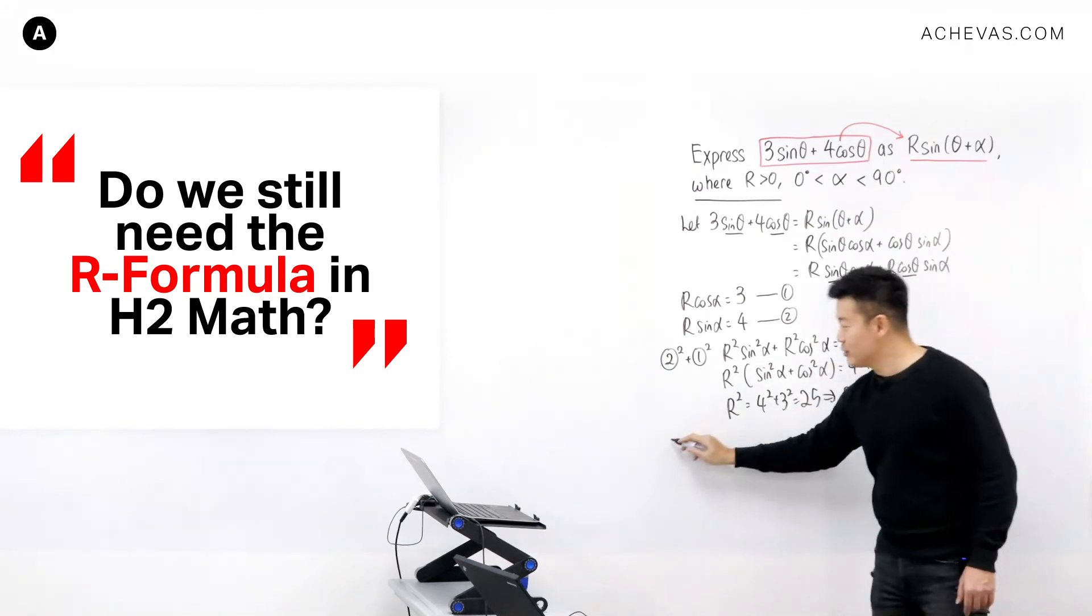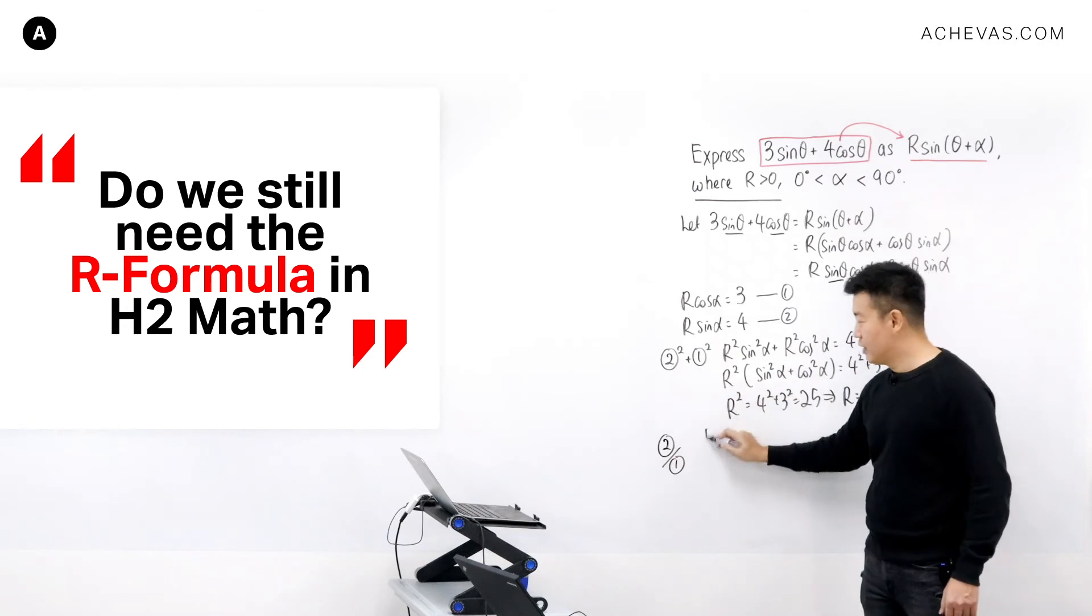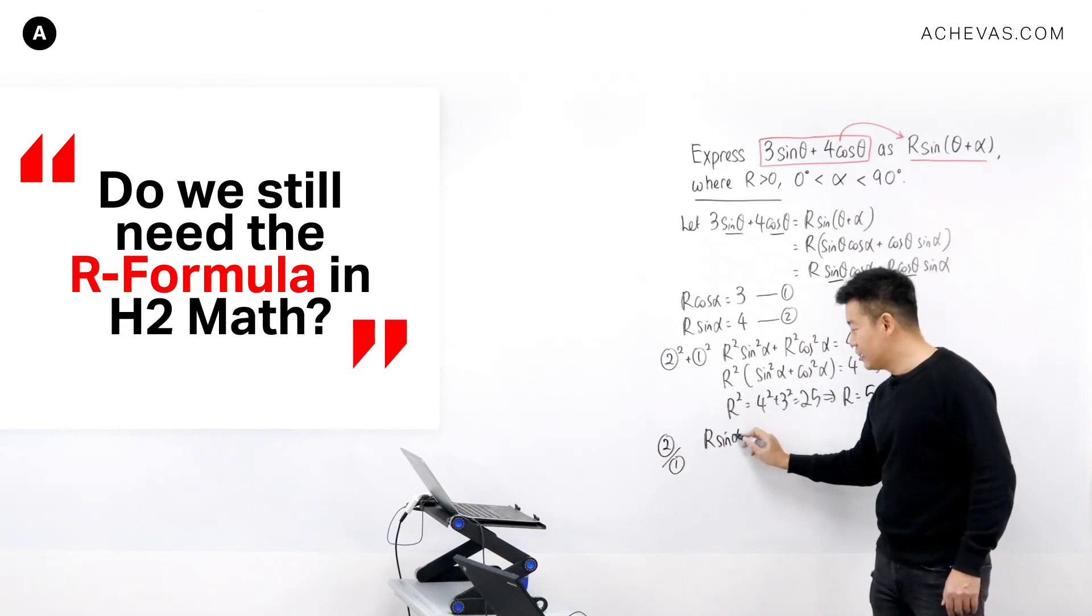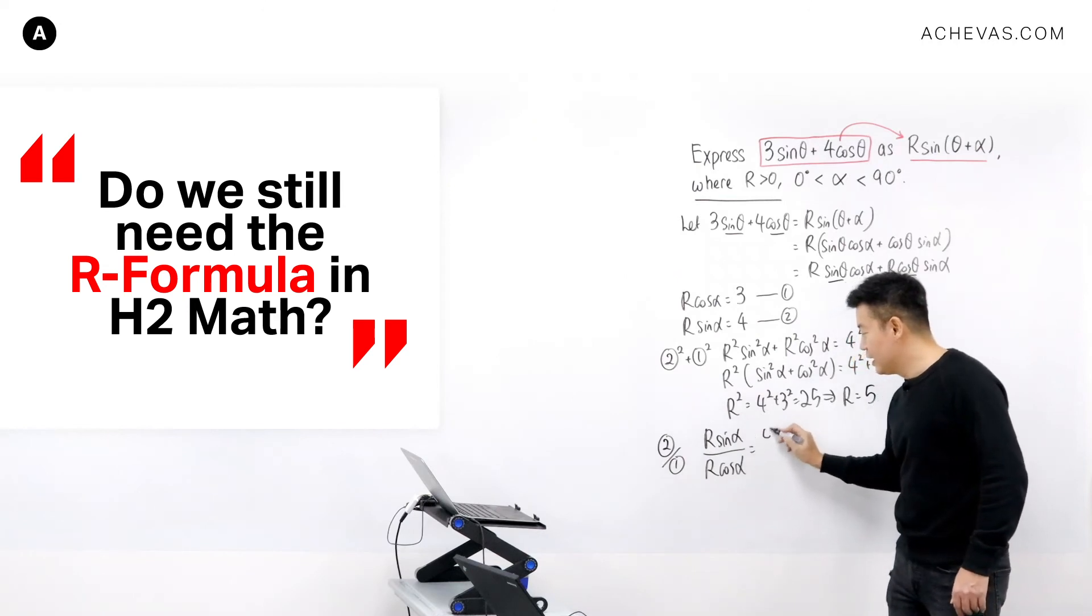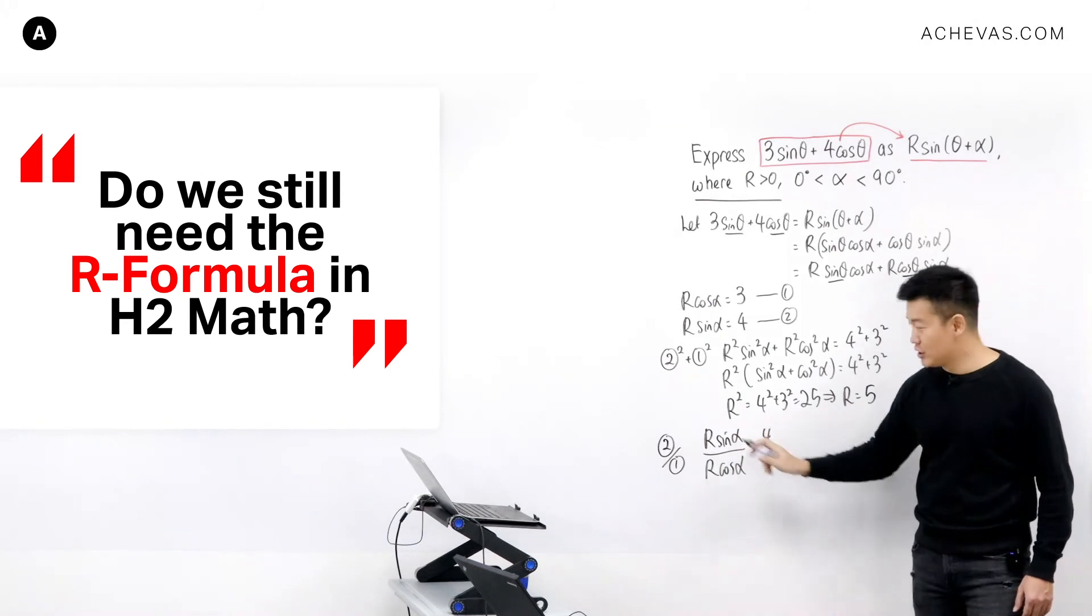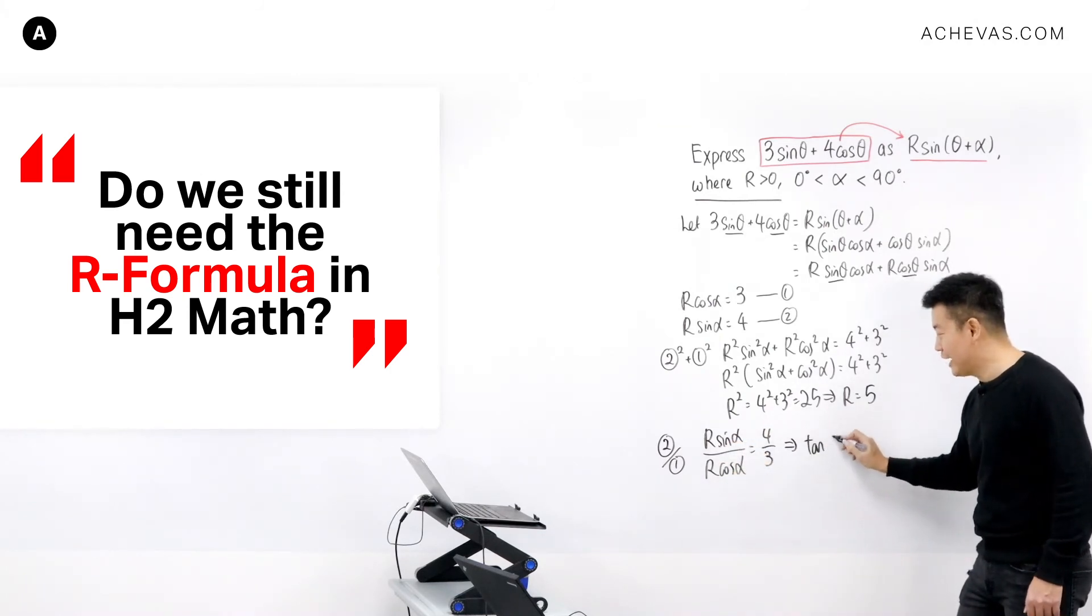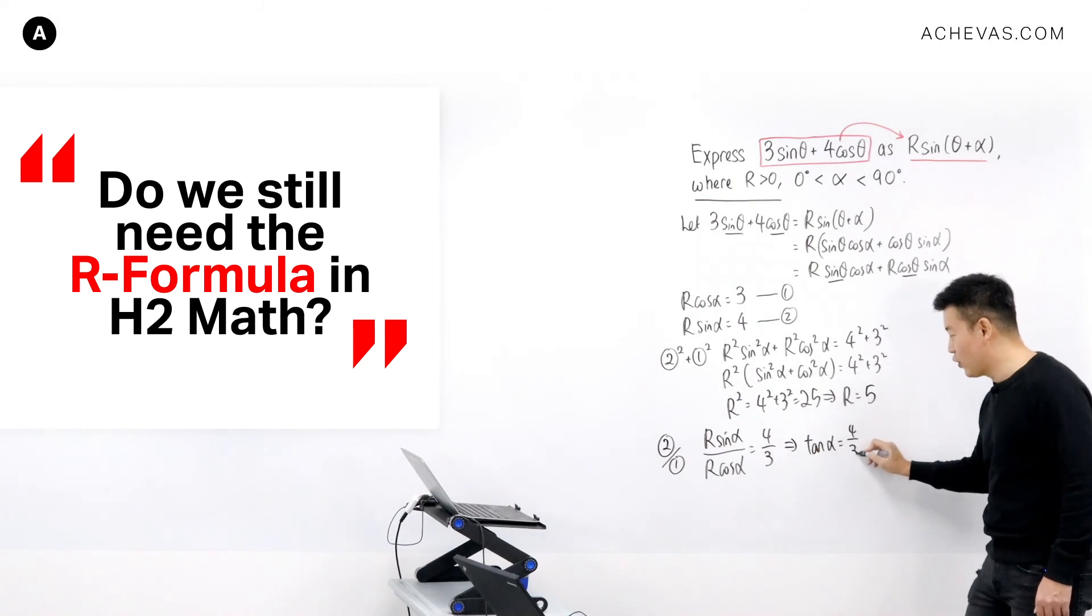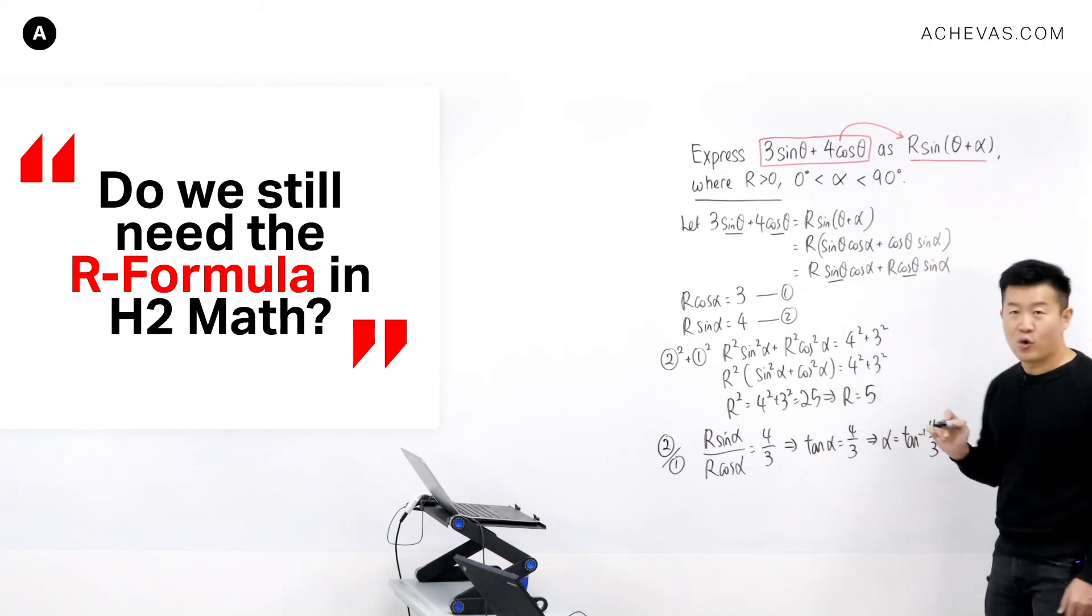And if you were to take equation number 2 divided by equation number 1, we will have R sine alpha divided by R cosine alpha. It is equal to 4 over 3. Sine divided by cosine gives me tangent. R will disappear. So what I'm going to be left with here is going to be tangent alpha is equal to 4 over 3. So alpha is equal to tangent inverse of 4 over 3.